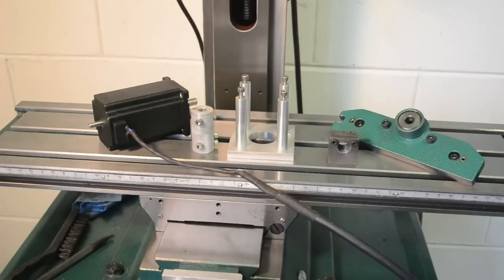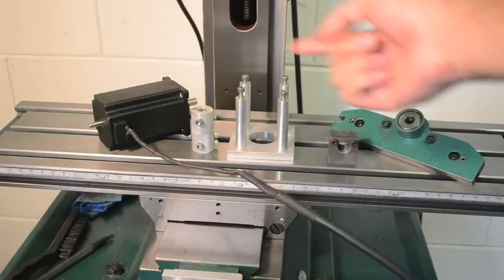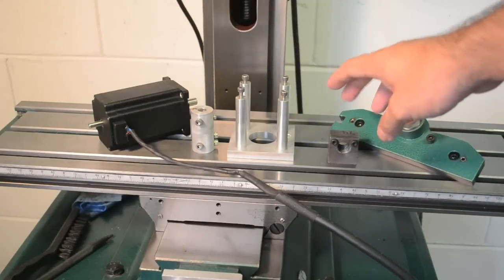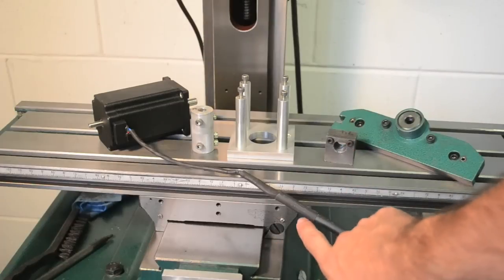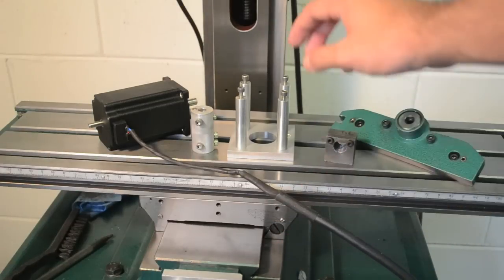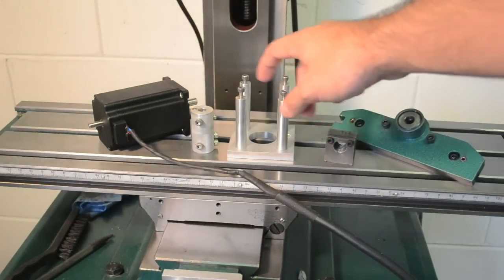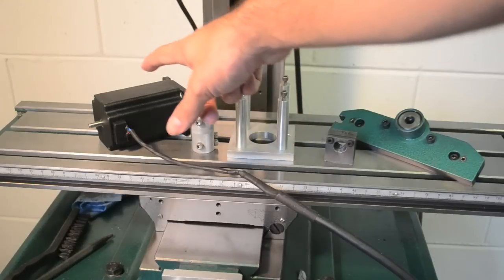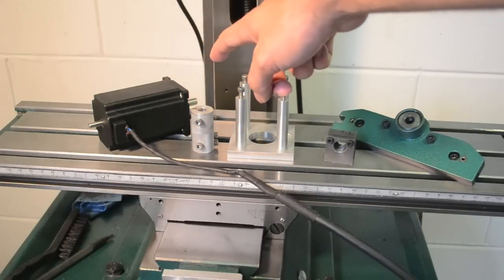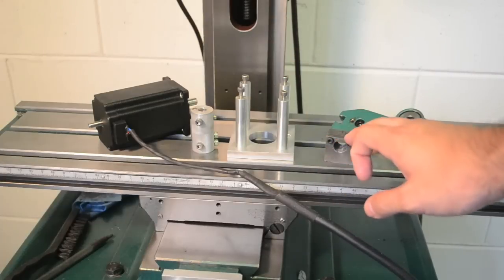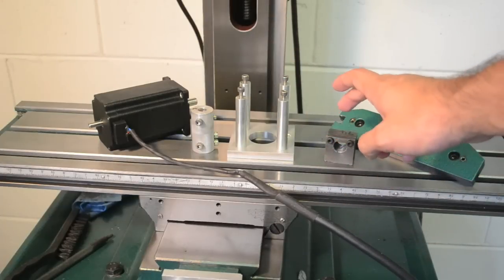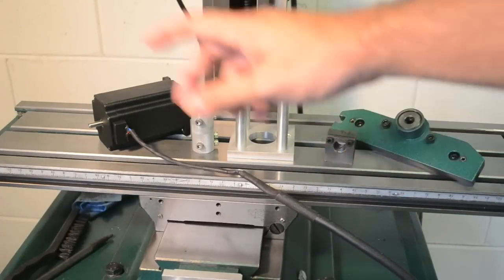This is all stuff for the x-axis. We've got the end bearing block that goes over there. This is actually the lead screw nut that will go up inside here. This is the stepper motor bracket, the coupling, and the x-axis stepper. So let me take this stuff off, take the table off, put the nut back in place, and grease everything up.